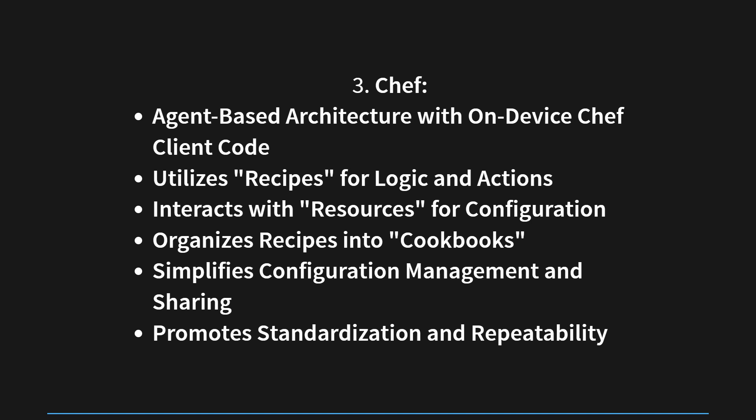In summary, data formats like JSON, XML, and YAML enable structured representation and exchange of data in network automation. RESTful APIs provide a standardized way for different programs to communicate and interact with each other over HTTP. Configuration management tools like Ansible, Puppet, and Chef streamline the management of configurations in larger networks, automating tasks and ensuring consistency across multiple devices.